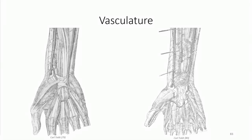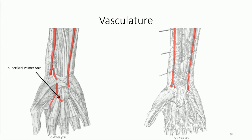The principal blood supply is from the radial and ulnar arteries. Tracing the radial artery at the wrist, it divides to provide an anterior division that passes deep to the thenar muscles to provide a minor contribution to the superficial palmar arch. The posterior division passes through the previously described anatomical snuff box. Either anterior or posterior divisions can give off the radialis indicis branch to the lateral aspect of the index finger and the princeps pollicis branch to the thumb.